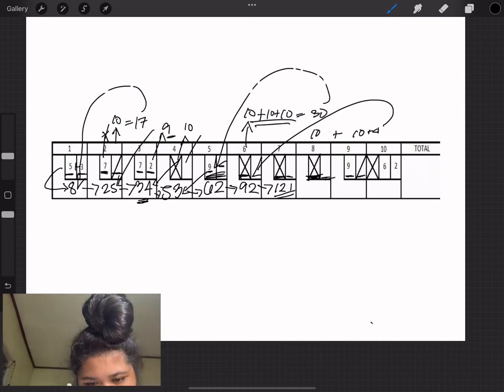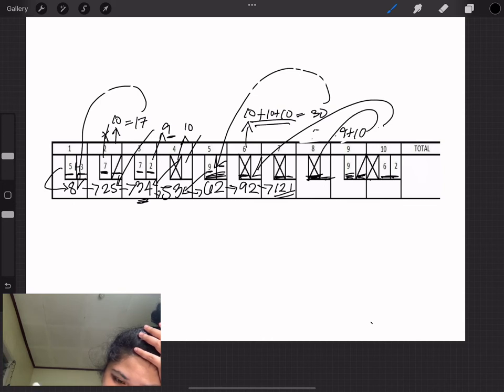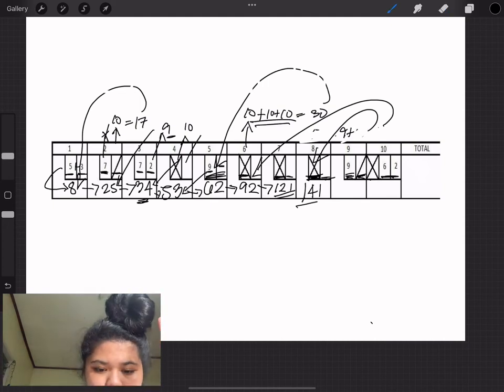The eighth round also ends up in a strike. So we're going to take that 10 points, add it to the next two rounds, and then we're going to add it to the 121 from the seventh frame. And that will give us a score of 141 for our eighth score.